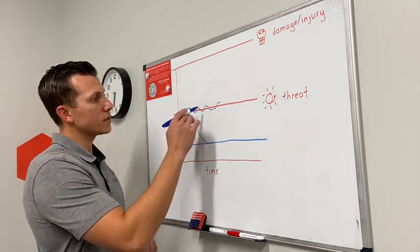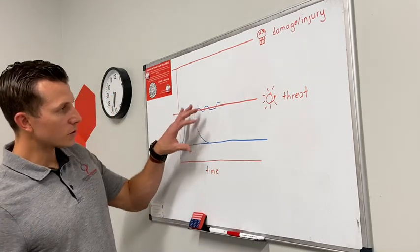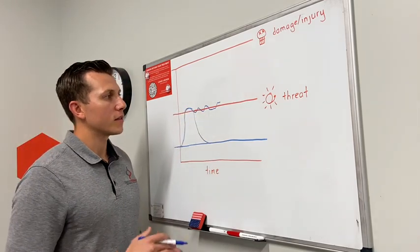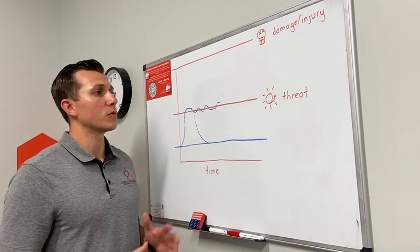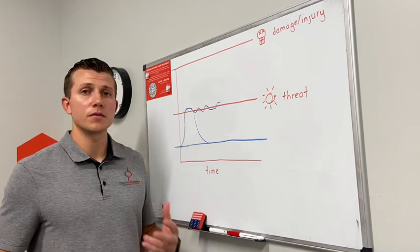As you can see up here on the graph, I've drawn this squiggly line representing why there's some instances where it will float around the perceived threat.